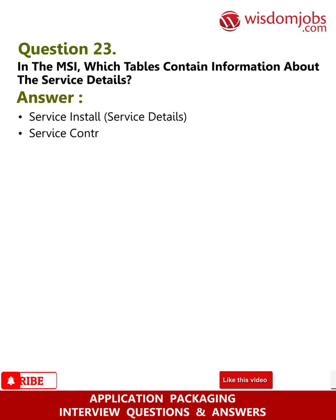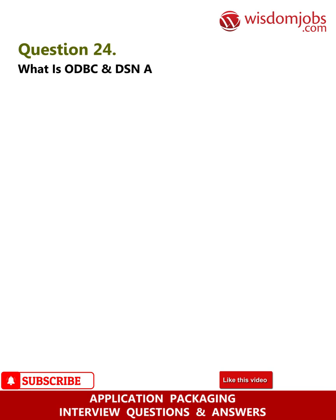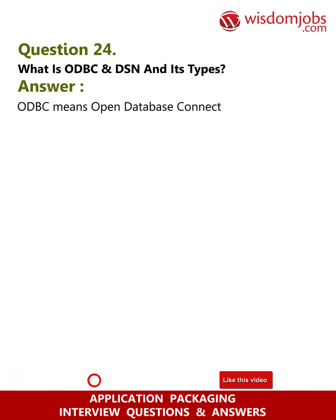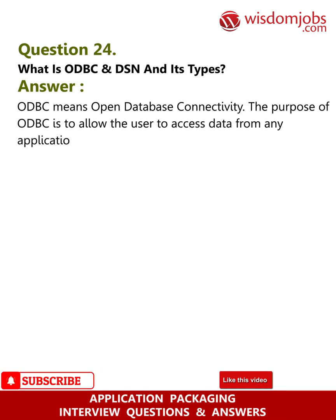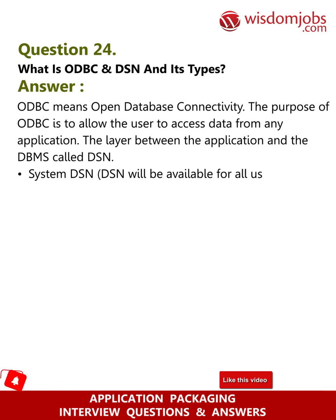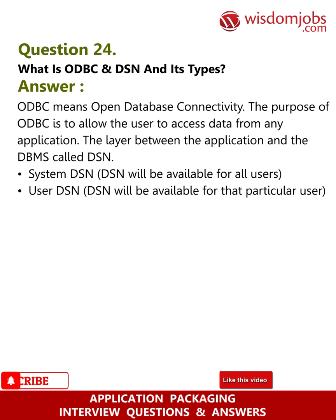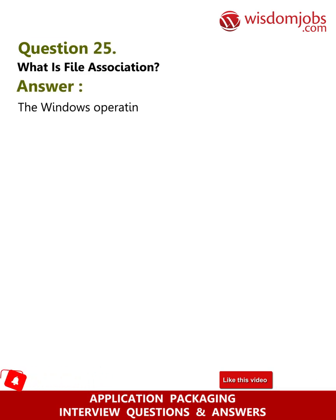Question 24: What is ODBC and DSN and its types? Answer: ODBC means Open Database Connectivity. The purpose of ODBC is to allow the user to access data from any application. The layer between the application and the DBMS is called DSN. System DSN: the DSN will be available for all users. User DSN: the DSN will be available for that particular user only.